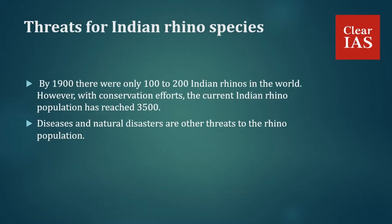The historical habitat of the Indian rhino included Pakistan, north India, modern-day Nepal, Bangladesh, Bhutan, and Myanmar. However, loss of large tracts of habitat and large-scale poaching for the horn — believed to have medicinal properties — has caused its extinction in all countries except India and Nepal. By 1900 there were only 100 to 200 Indian rhinos in the world; with conservation efforts, the current population has reached around 3500.